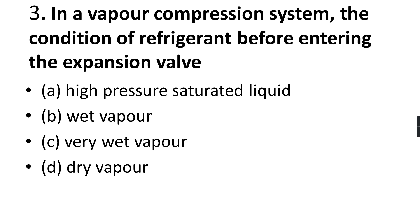Next, in a vapor compression system, the condition of the refrigerant before entering the expansion valve. In the vapor compression cycle, the main core parts are: evaporator, then compressor where the refrigerant is compressed, then condenser where it is cooled, then the expansion device where it is expanded, and then it reaches the evaporator again — circulating through these four parts.